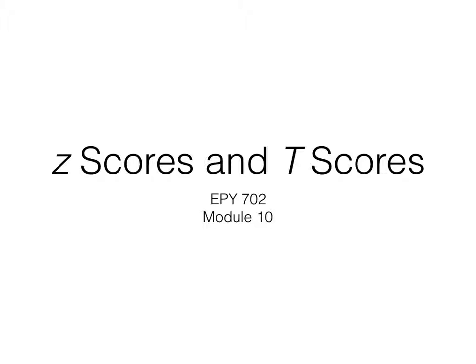Most of you in educational research are pretty comfortable with things like stanines and percentiles. But there are two types of standardized scores that I'd like to talk with you about and make sure that you understand. And those are z-scores and T-scores.